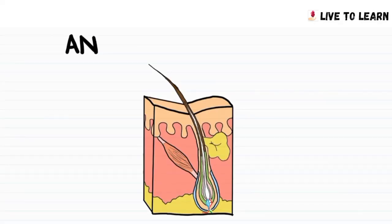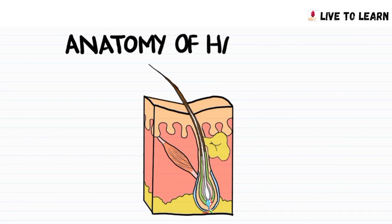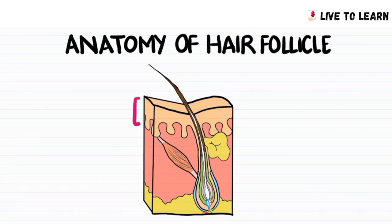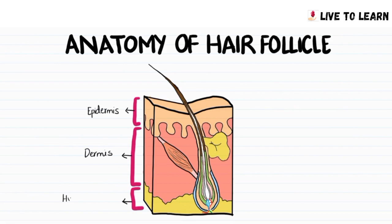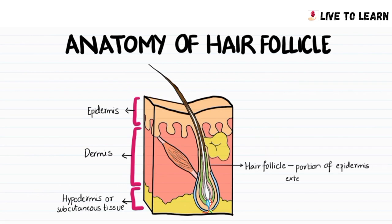Before we talk about the hair growth cycle, let's take a closer look at the anatomy of the hair follicle. The outermost layer of the skin is the epidermis, followed by the dermis, and then comes the hypodermis or subcutaneous tissue. The hair follicle is basically a portion of epidermis extending into the dermis that surrounds the hair.